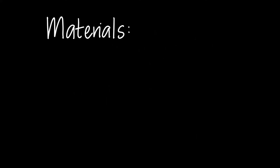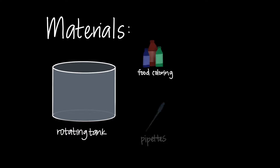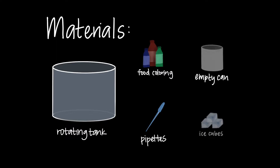For this experiment we'll need the following materials: one rotating tank, some food coloring to see the circulation, a pipette to distribute the food coloring at different parts of the tank, an empty can, and some ice to create a temperature gradient across the tank.